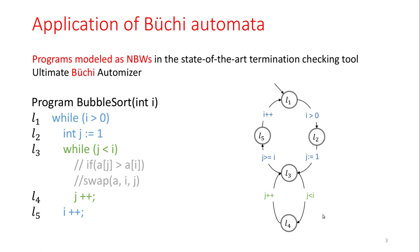Büchi Automata can be applied in many fields such as model checking and program verification. For instance, Büchi Automata can be applied in Ultimate Büchi Automizer. A bubble sort program can be modeled as a Büchi Automaton where each state corresponds to a program location and each label on the transition corresponds to a program statement, and here every state is accepting, which means that each possible run is accepting.